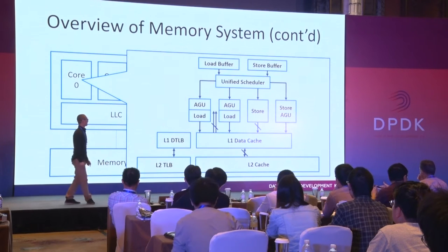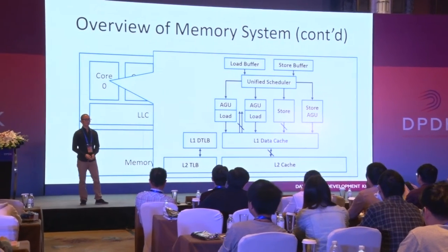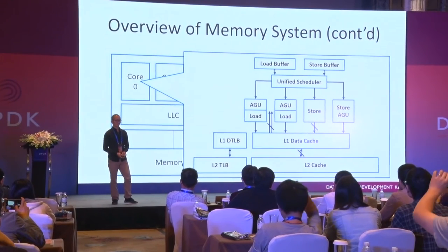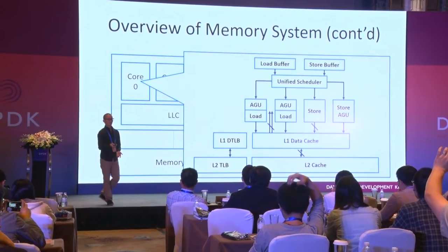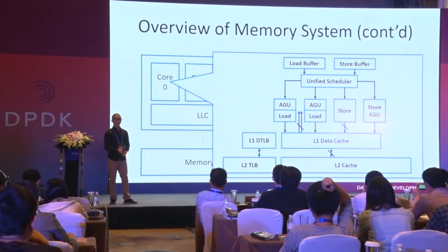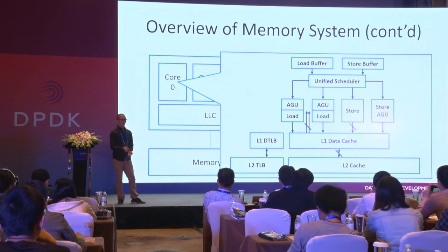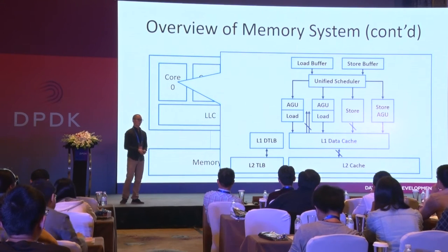The latency will be really high. To be more detailed, in one core, it can be more complicated. On the right-hand side framework, we still have two additional layers of cache. We also have AGU, PLB, DTLB, and others.